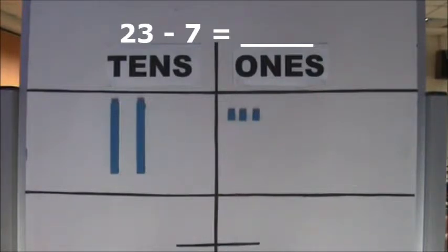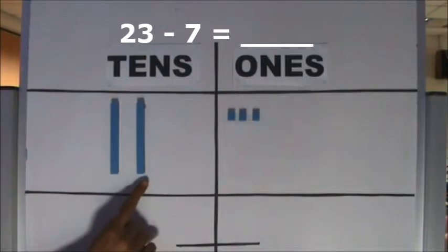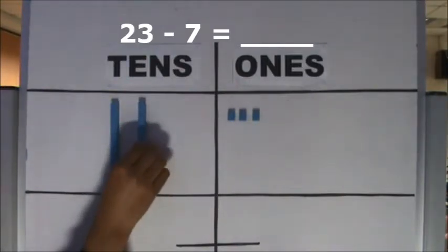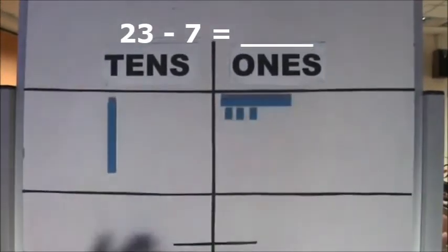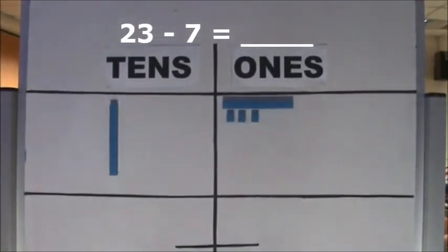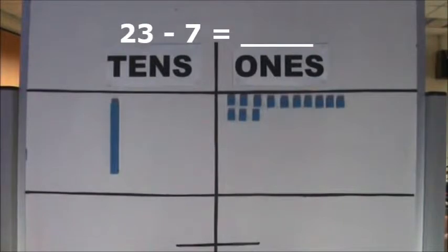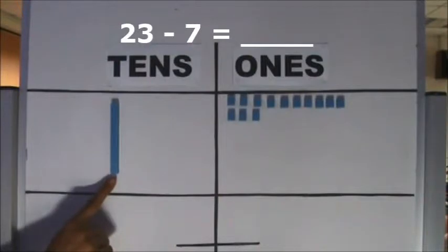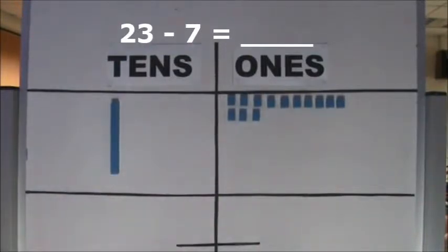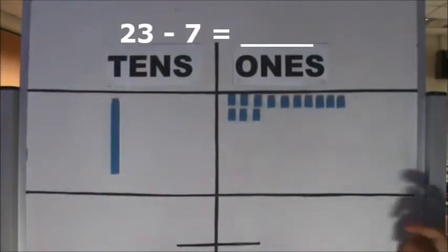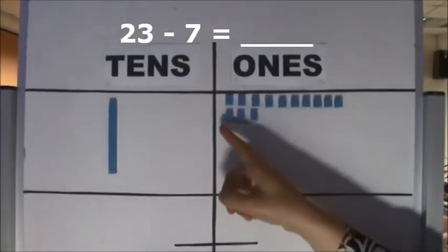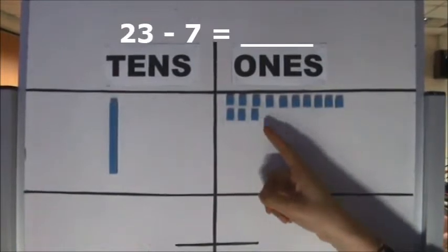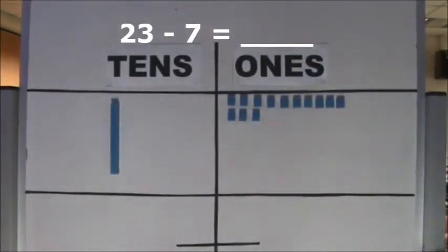We need to regroup 1 ten for 10 ones. We regroup 1 ten for 10 ones. How many tens do we have left? We have 1 ten left. How many ones do we have now? 10 and 3 make 13. We have 13 ones now.